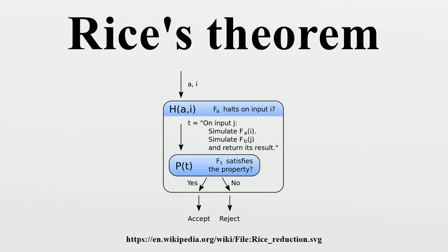For the formal proof, algorithms are presumed to define partial functions over strings and are themselves represented by strings. The partial function computed by the algorithm represented by a string A is denoted F_A. This proof proceeds by reductio ad absurdum. We assume that there is a non-trivial property that is decided by an algorithm, and then show that it follows that we can decide the halting problem, which is not possible, and therefore a contradiction. We assume that P is an algorithm that decides some non-trivial property of F_A. Without loss of generality, we may assume that P(no_halt) = no, where no_halt is the representation of an algorithm that never halts. If this is not true, then this holds for the negation of the property.